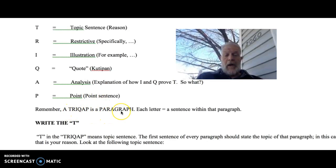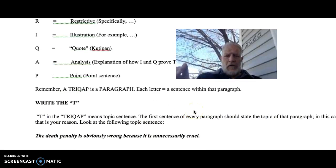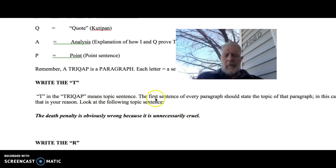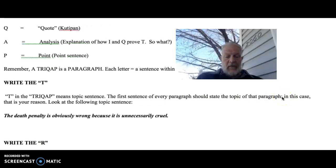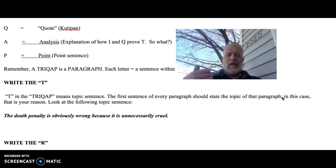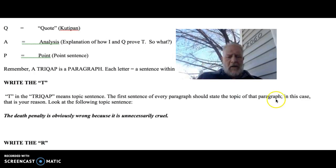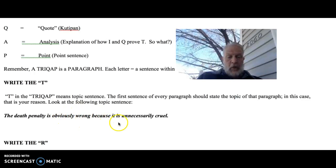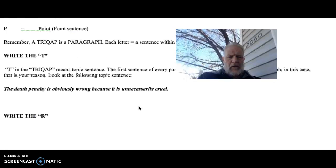So basically, a TRICAP is a paragraph. Each letter equals a sentence within that paragraph. I want you to use this template. So first of all, you're going to write the T. It means the topic sentence. It needs to have a hook. It needs to have some sort of proposal that says what you are trying to argue about. For example, the death penalty is obviously wrong because it is unnecessarily cruel, and you would have to prove that it's unnecessarily cruel through the use of your illustrations and your quotes.